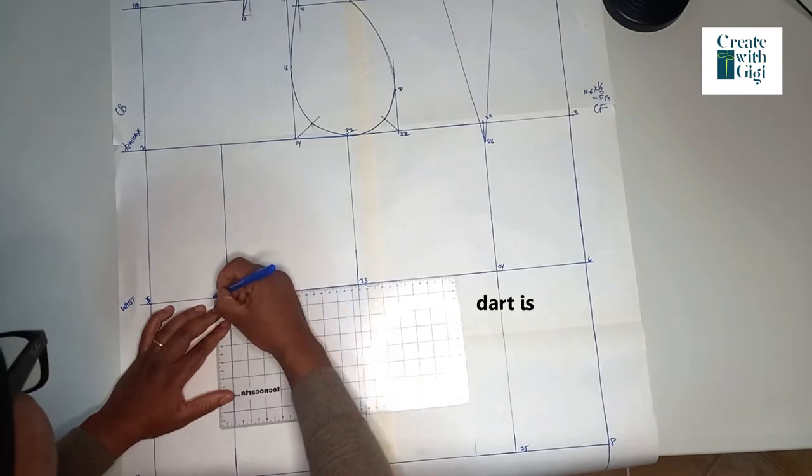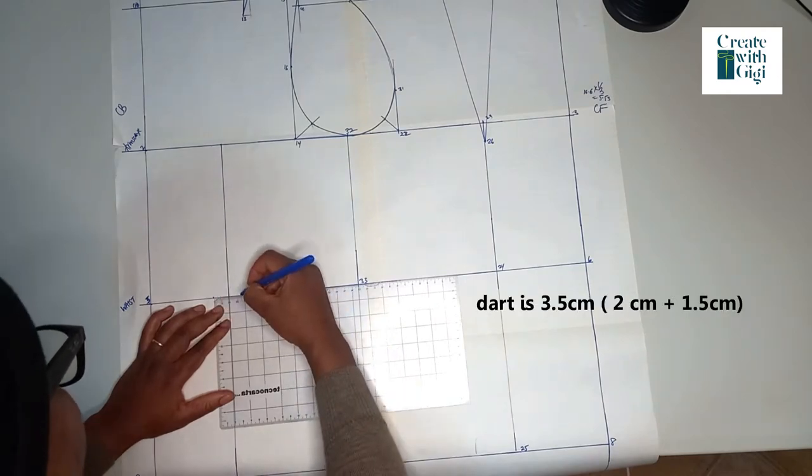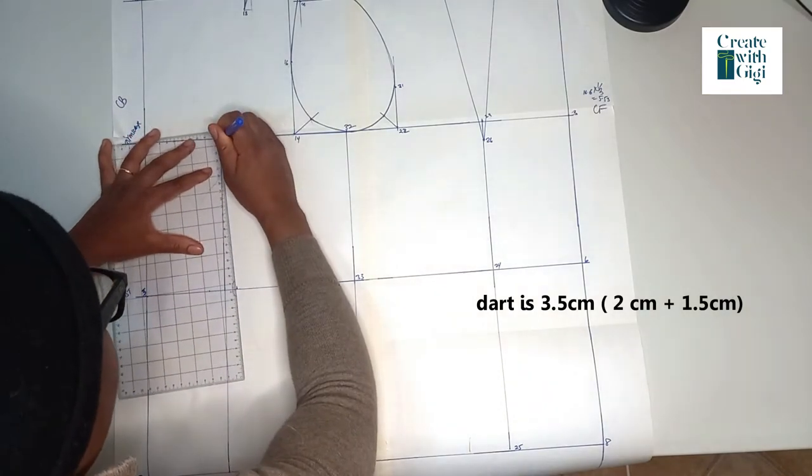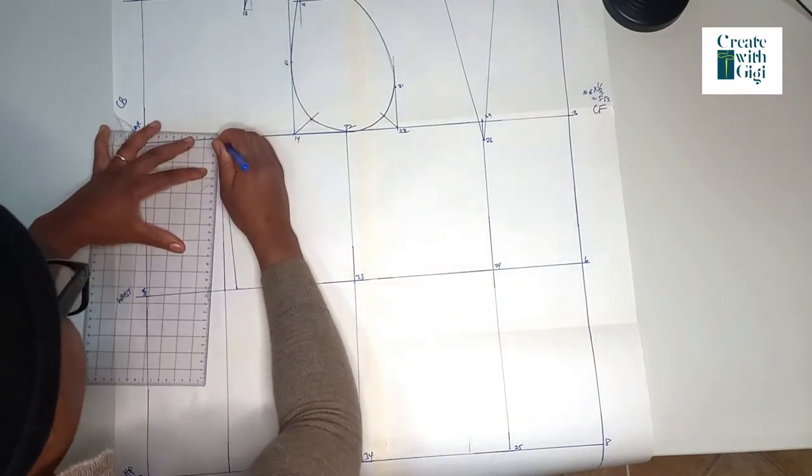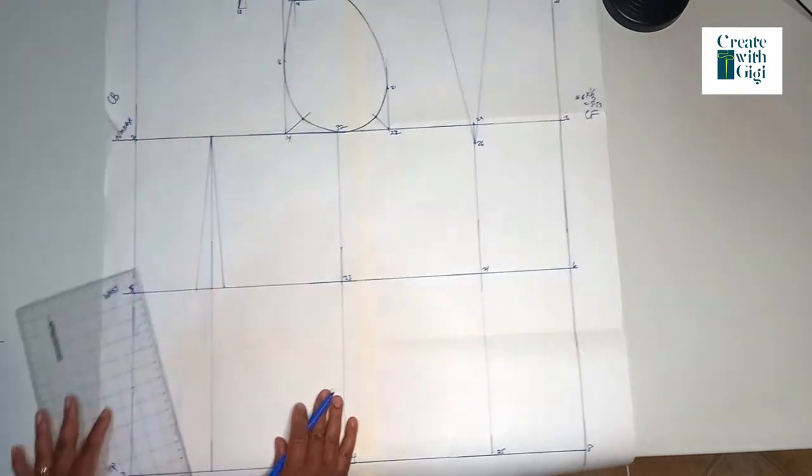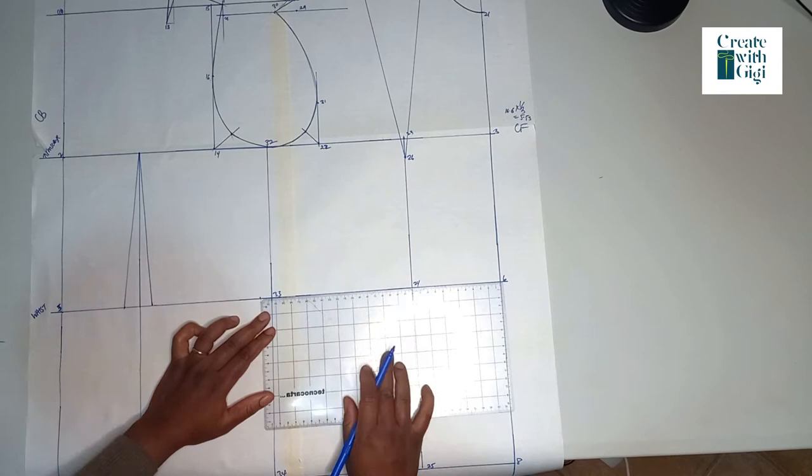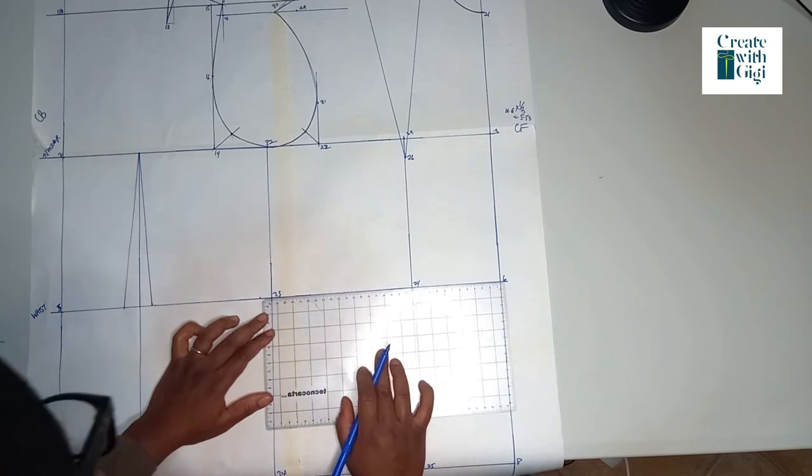Let us begin from the back. We're going to take out 1.2 centimeters from the left-hand side and 1.5 centimeters from the right-hand side, and draw your dart legs from that midpoint at the armhole line.